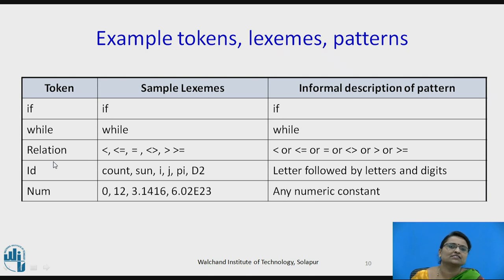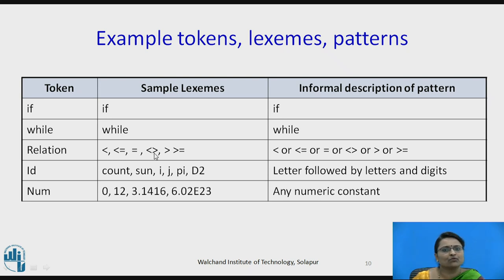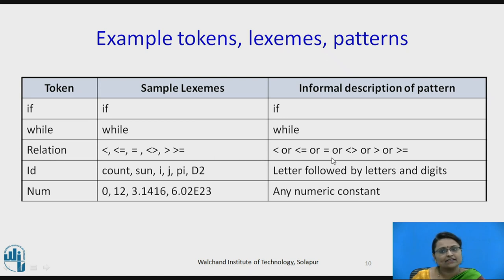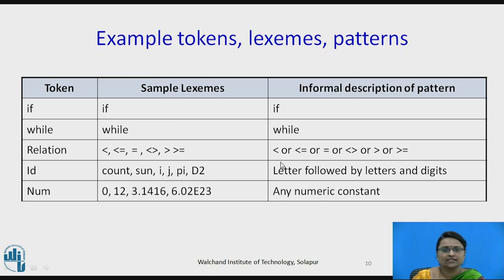For relational operators, the lexemes include less than, less than or equal to, equal to, not equal to, greater than, and greater than or equal to. The token generated for all of these is 'relation'. The pattern is written as: less than, or less than equal to, or equal to, or less than greater than as not equal to, or greater than, or greater than equal to. For identifiers, the pattern is letter followed by (letter | digit)*, and lexemes include count, son, i, j, pi, and even d2, which is a valid identifier — returning the token identifier.